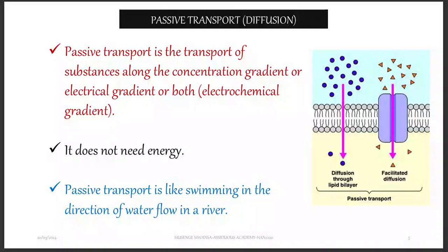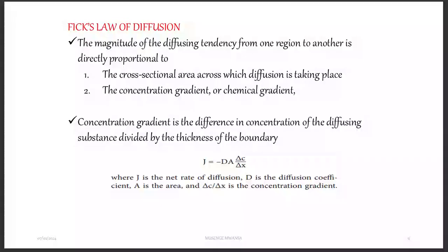Passive transport is a movement along the concentration gradient, or down the concentration gradient, from a region of high concentration to the region of low concentration. No energy is required. It is more like swimming in the direction of water in a river. That is passive transport, also known as diffusion. There are some factors that affect the rate of diffusion.